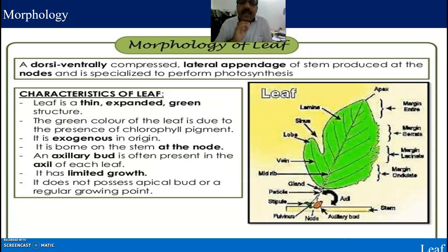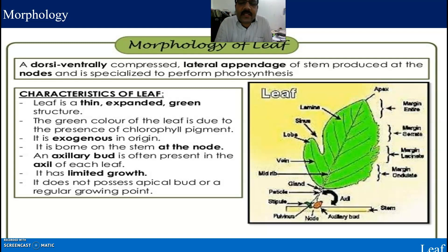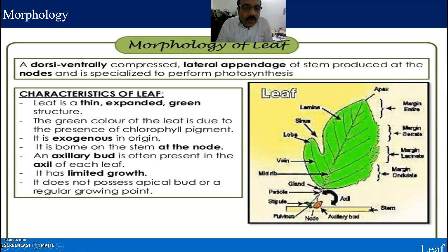What are the important characters of a leaf? The leaf is the most important part of a plant, which always synthesizes food material during the process of photosynthesis. The most important characteristics are: leaf is a thin, expanded green structure. The green color is due to the presence of chlorophyll pigment. It is exogenous in origin, born on the stem at the node. An axillary bud is often present in the axil of each leaf. It has limited growth and does not possess an apical bud or a regular growing point.